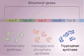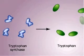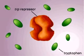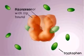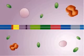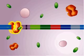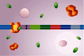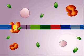As tryptophan is synthesized, it diffuses through the cytoplasm. When it encounters a trp repressor, it binds a site on the repressor, changing that protein's shape. The repressor can now bind the operator, block polymerase binding, and prevent transcription of the structural genes.